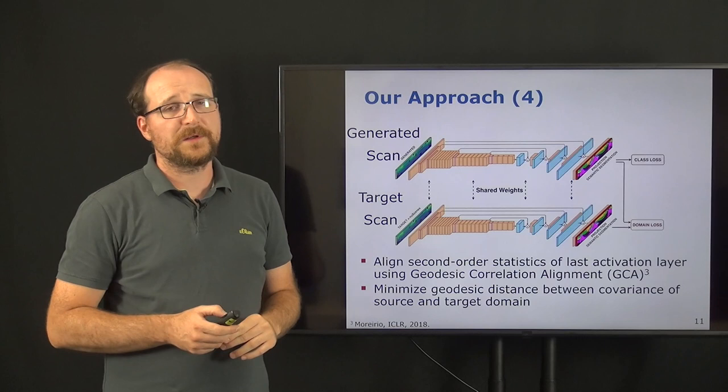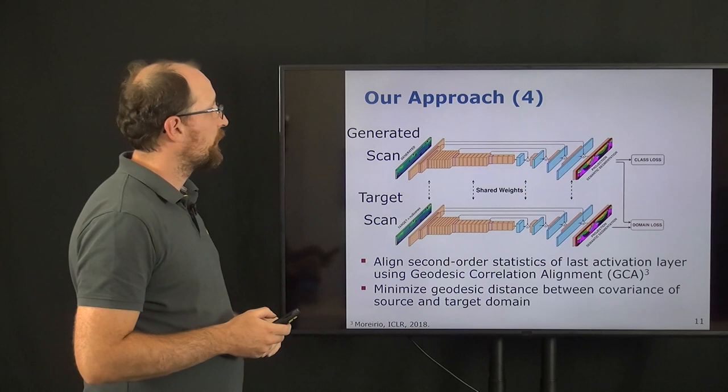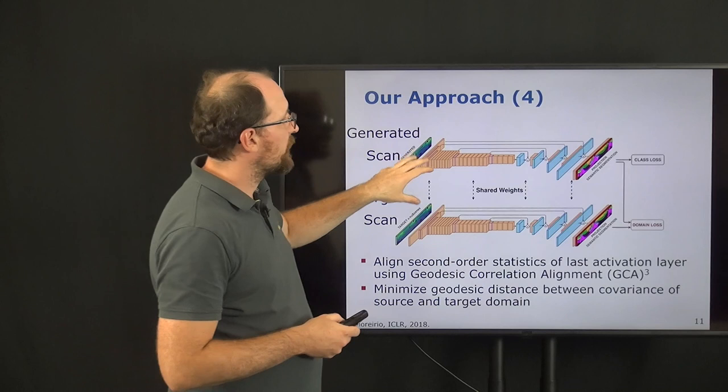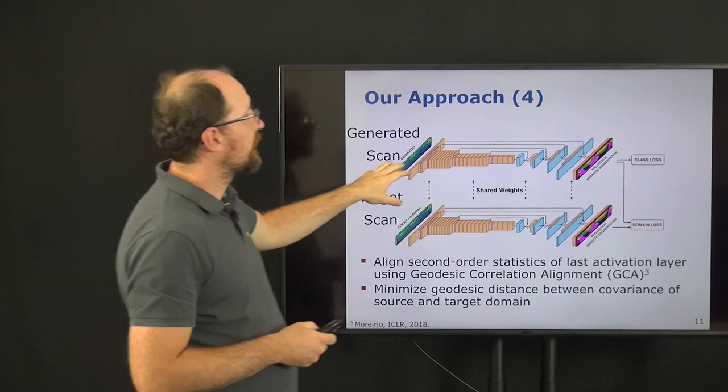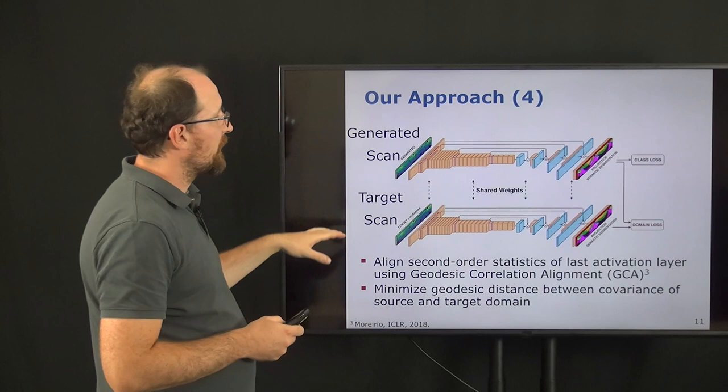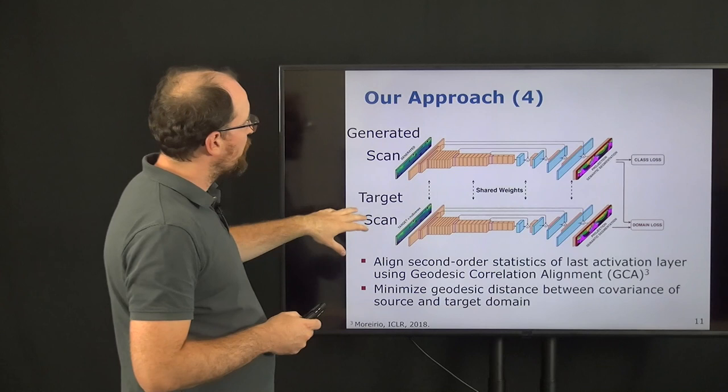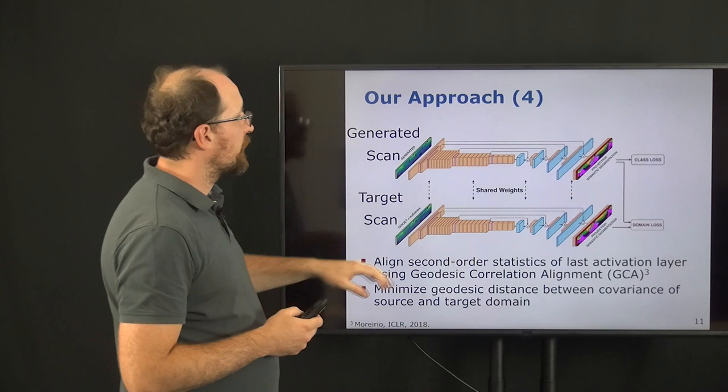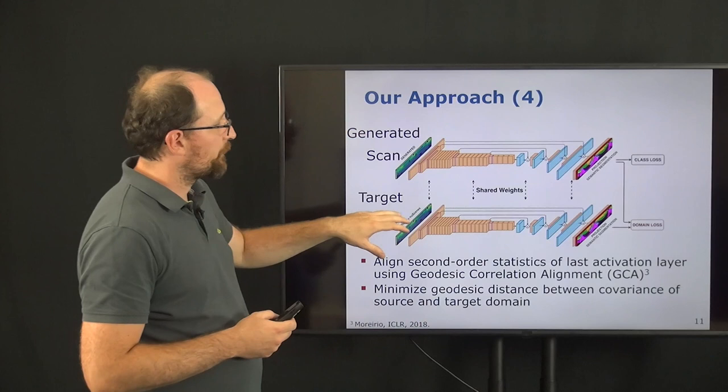Lastly, we use the so-called geodesic correlation alignment to furthermore improve the domain adaptation. Here, the idea is that we use two networks where we put into one network our generated scan with the label information and get from this the class loss, which provides us with information about the semantics, which we can then use to optimize the parameters of the network. But at the same time, we use this second network with shared weights, where we put in the target scan. And now the idea is to align the covariances of the last layers such that they are similar to each other.